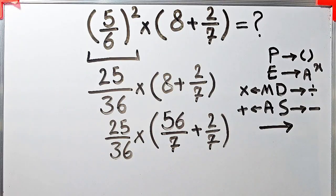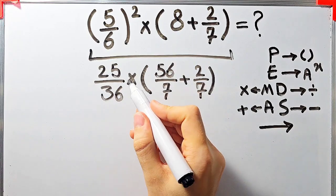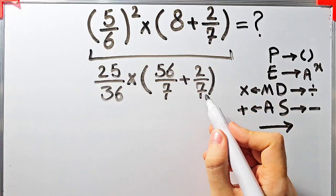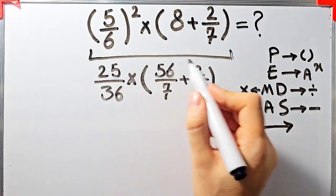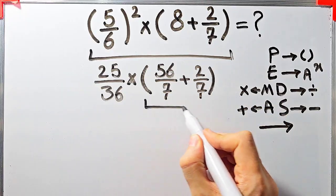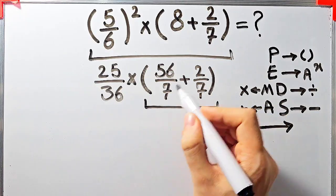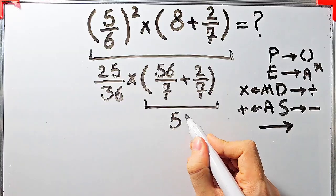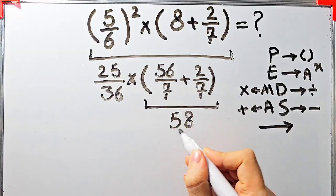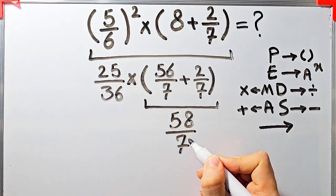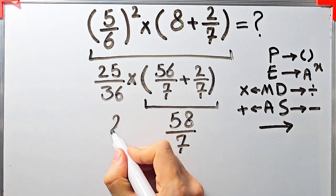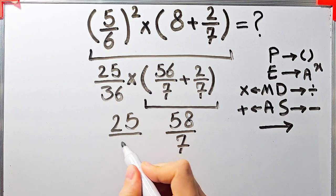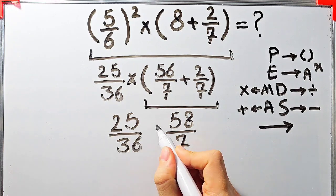We simplify these parentheses: 56 over 7 plus 2 over 7 equals 58 over 7. Now the question is 25 over 36 times 58 over 7.